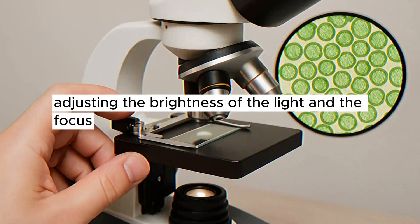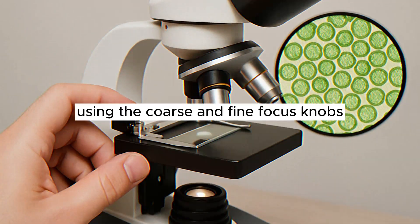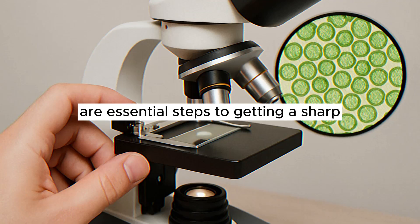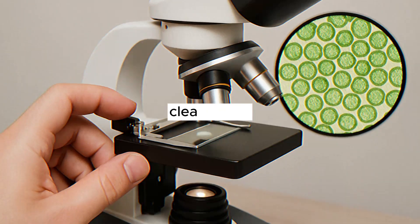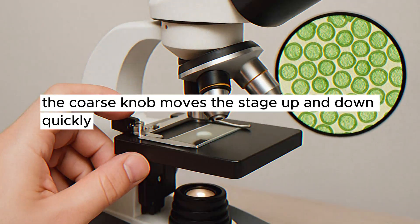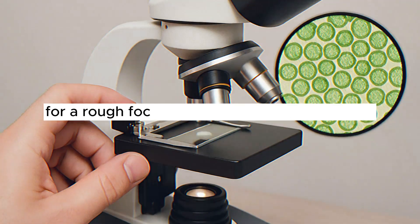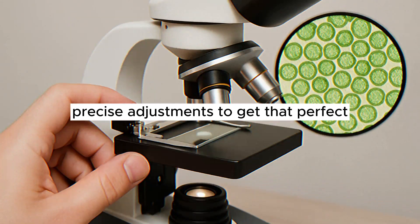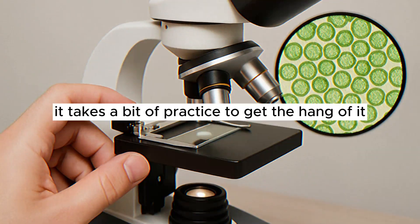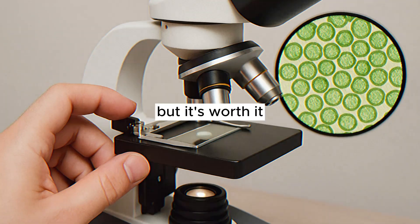Adjusting the brightness of the light and the focus using the coarse and fine focus knobs are essential steps to getting a sharp, clear image. The coarse knob moves the stage up and down quickly for a rough focus, and the fine knob makes tiny, precise adjustments to get that perfect crisp view. It takes a bit of practice to get the hang of it, but it's worth it.